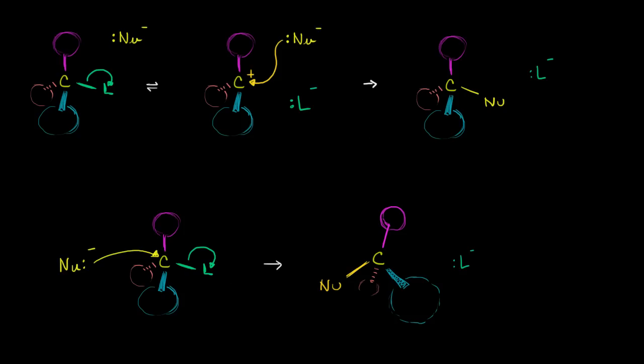Well in this top one, we see that this leaving group leaves first, and that this is the rate determining step. And then a nucleophile comes in here and attacks the carbocation and attaches. So this is a substitution reaction with the nucleophile. But the rate determining step involves only one of the reactants. The leaving group's got to leave. So this right over here is an SN1 reaction, only involving one of the reactants.